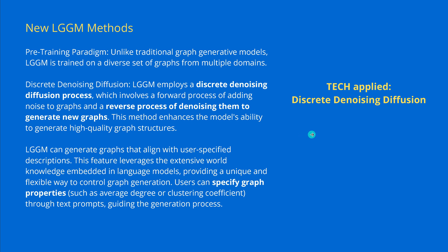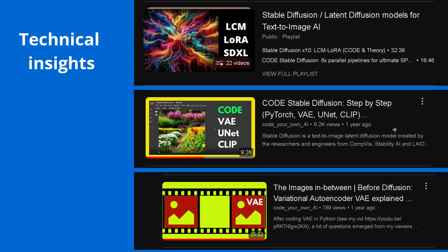You know exactly what this is because we have done it in the past already with images. The new feature of LGGM is that users can specify graph properties in their text prompt, such as the average degree and the clustering coefficient (CC), through text prompts that guide the generation process. If you are not sure, there are videos I would recommend where I show the technical insight into Variational Autoencoder, StableDiffusion, the complete code, VAE, UNET, CLIP, Latent Diffusion model, and LoRA SDXL.